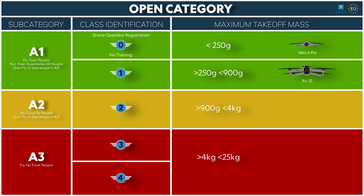The R3s is a 724-gram drone, so its class identification is C1. To legally fly in the EU you are required to register yourself as a drone operator and complete online training for the A1/A3 open subcategory.